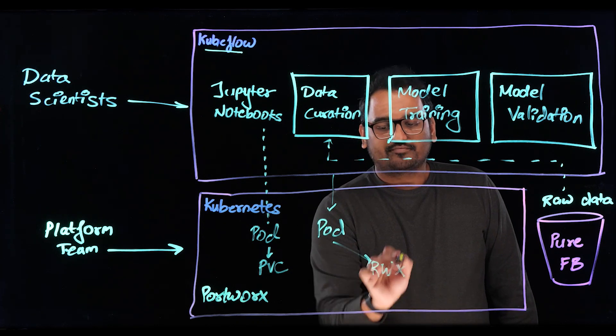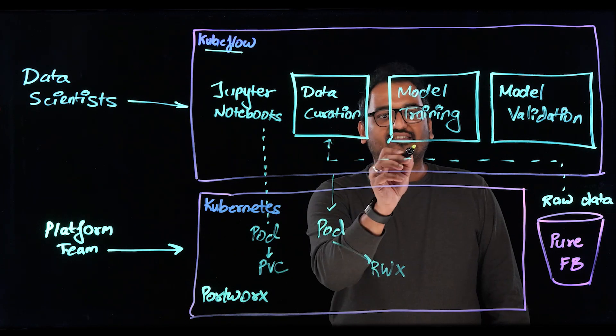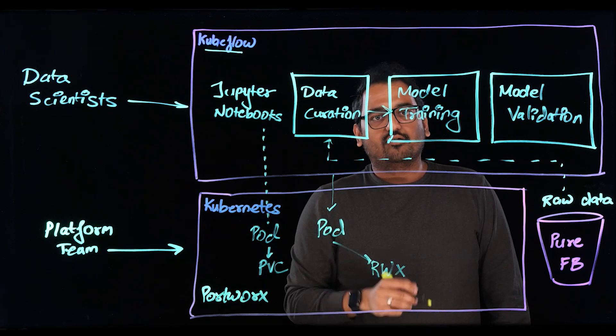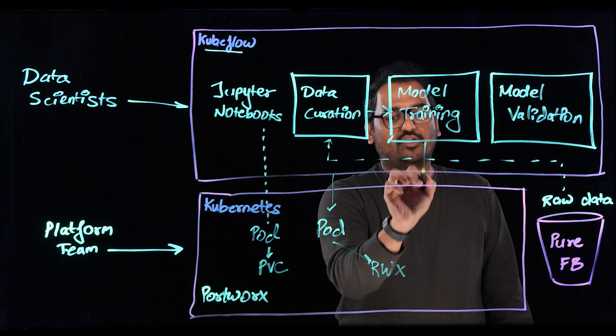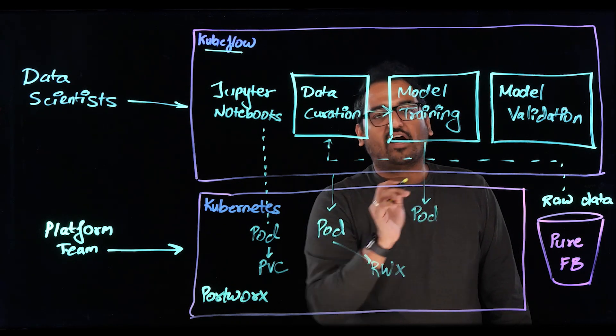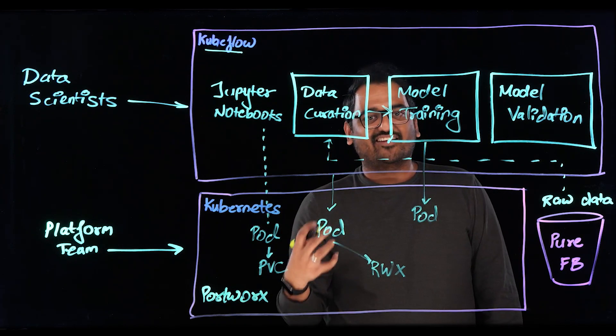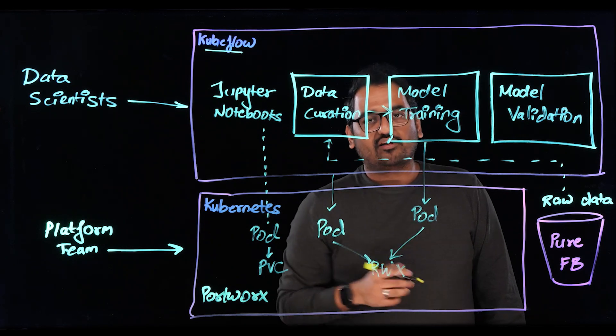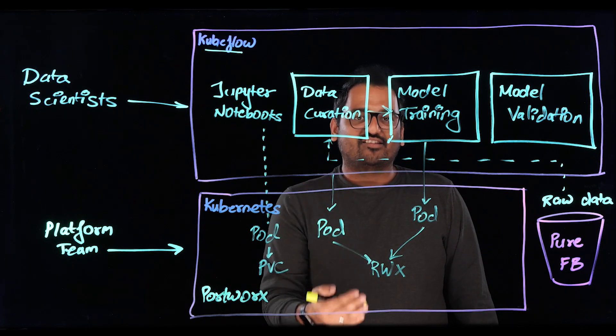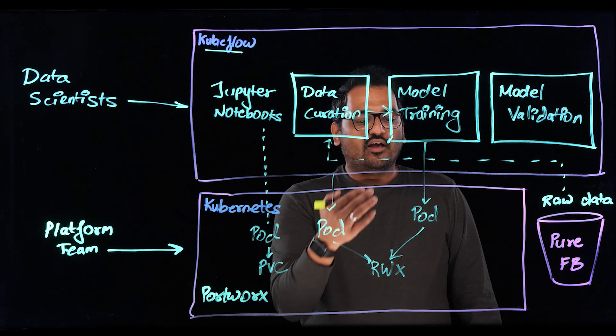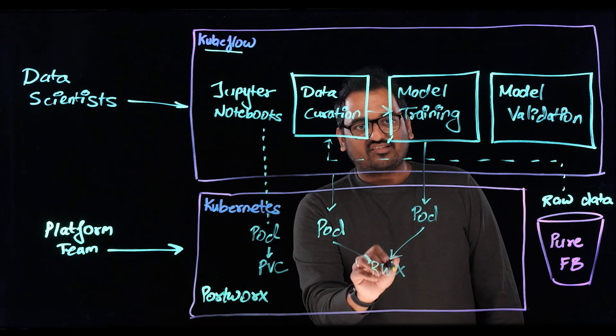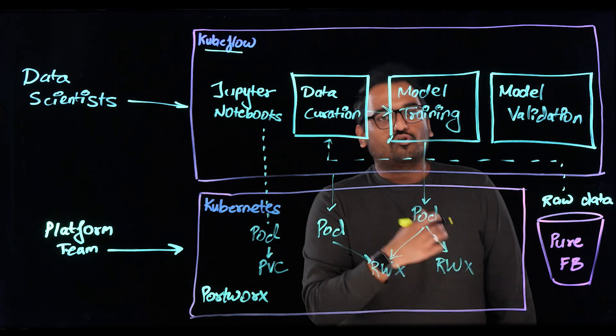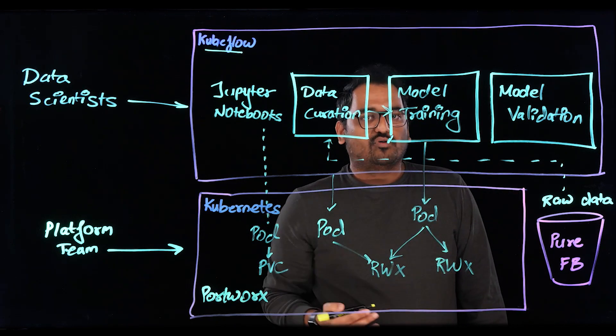So once that's done, once my data curation phase is done, I move on to the model training phase, which is where a second pod gets spun up. And this pod, instead of having to import the data again, the curated dataset again from my S3 bucket, can just point to the read-write many volume that already exists on my Kubernetes cluster. Once that's done, I can either use the same volume or I can spin up a new read-write many volume to store my model checkpoints, or this can be a read-write once volume as well.